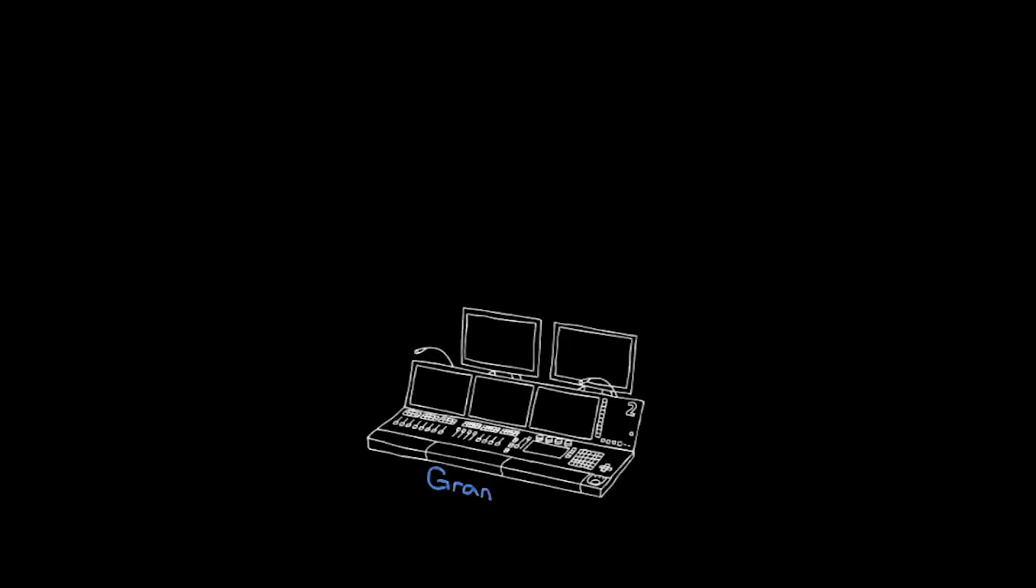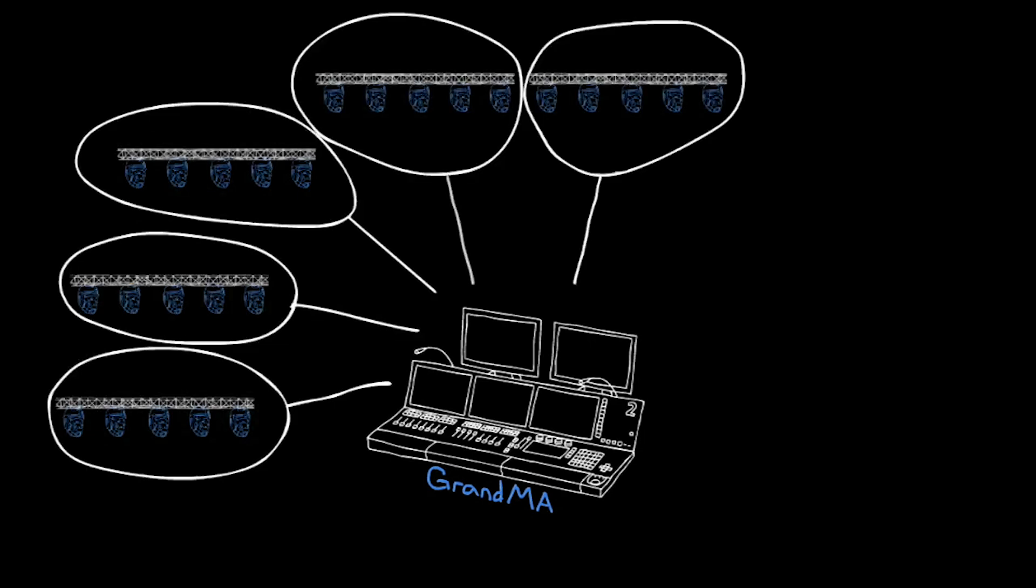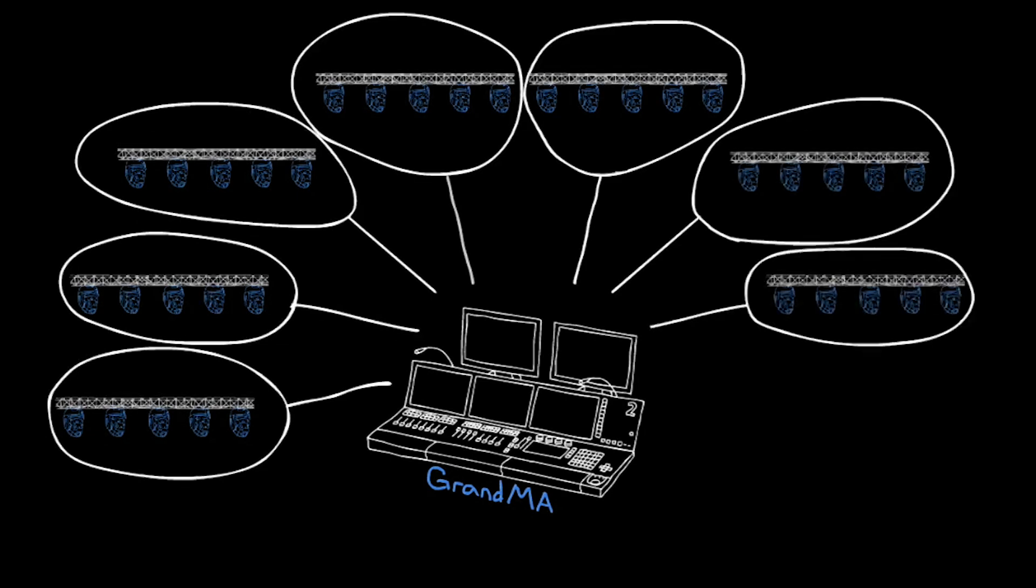Some of these consoles have different universes. Grand MAs can go up to 8 universes of DMX. Each one will be 512 parameters because they get eaten up very fast, and once they are eaten up, you're done. You still need power, so you still need a moving light distro that the fixtures can get power from. It's all data.